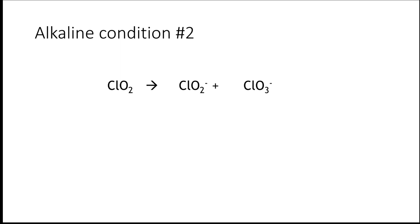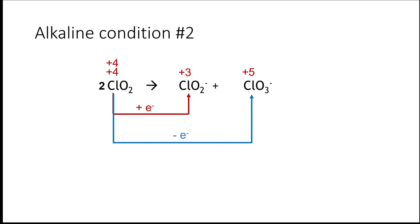Let's go through this problem together. Balance the chlorine first. Next, assign the oxidation states of the species that undergo reduction and oxidation. You can see that the chlorine atom in chlorine dioxide (ClO₂) is both oxidized and reduced. So this is an example of a disproportionation reaction, where the same species undergoes both reduction and oxidation. Next, account for the number of electrons being transferred. One chlorine is reduced from +4 to +3, and another is oxidized from +4 to +5. This time, the number of electrons are already the same.